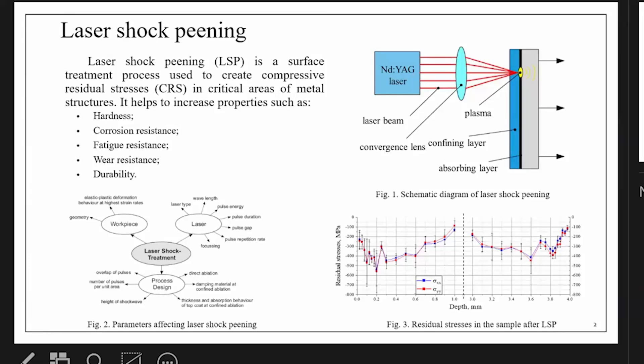Laser shock peening is a method of surface treatment of metals based on the creation of compressive residual stresses in the near-surface layer of the material. These deep stresses, which can be up to 2 mm thick depending on the material, improve fatigue properties and corrosion resistance, thereby increasing the service life of machine parts.